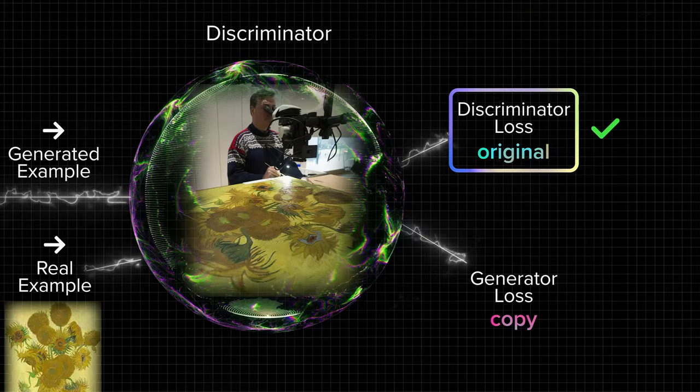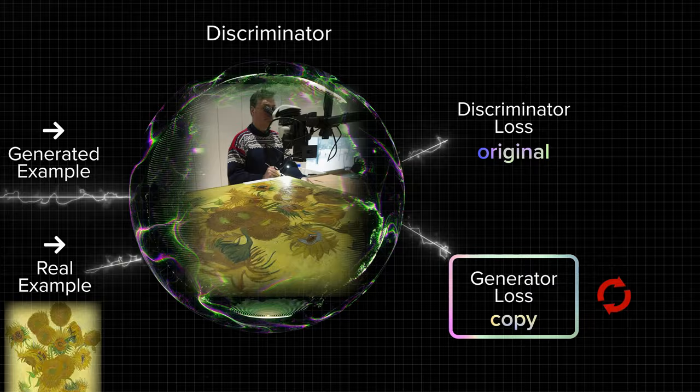Whichever network is the winner, it remains the same, while the loser is updated again and again after each feedback loop.